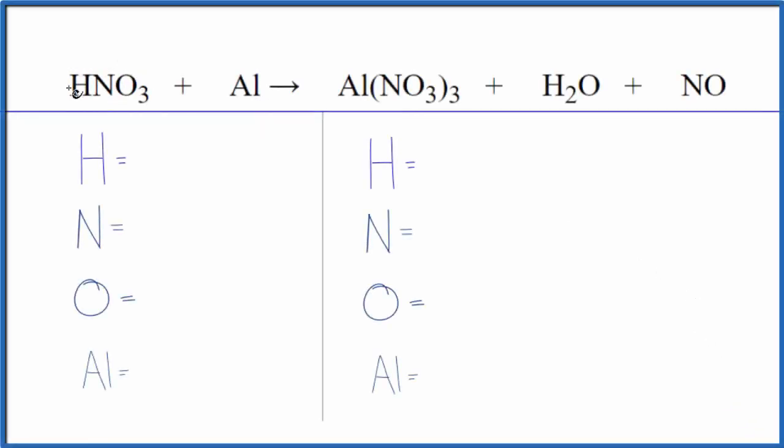In this video, we'll balance the equation for HNO3 plus Al. This is nitric acid plus aluminum, and we're talking about dilute nitric acid here.